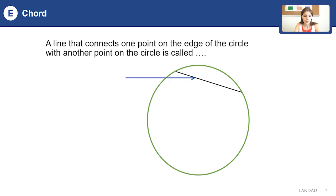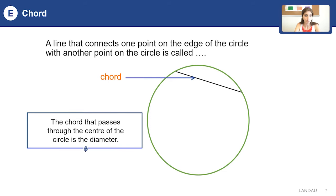Chord: a line that connects one point on the edge of the circle with another point on the circle is called a chord. The chord that passes through the center of the circle is the diameter.